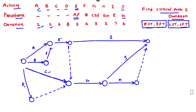Now we write the corresponding durations: A = 2, B = 2, F = 4, E = 3, C = 4, D = 8. Dummy activities have zero duration, so we put 0. Activity I = 7 days, J = 6 days, H = 2 days, and G = 3 days. The starting point is labeled 'Start' and the ending point is labeled 'End.'